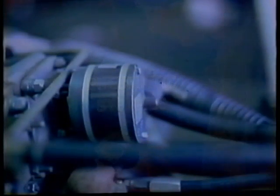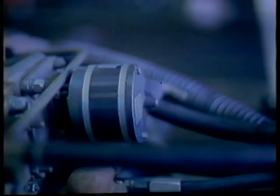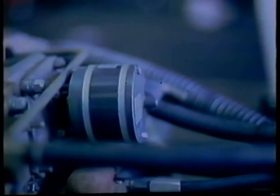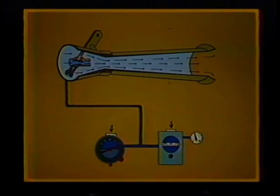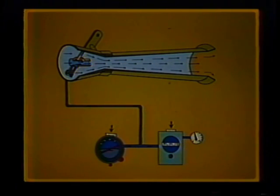Modern aircraft pneumatic systems evolved as a result of demands for a constant air source, necessary to drive navigational, gyroscopic instruments, and many other aircraft systems. In the early days of aviation, this air source requirement was not nearly as important as it is today. The crude gyro instruments were simply spun by a stream of air flowing over buckets cut in a rotating wheel.